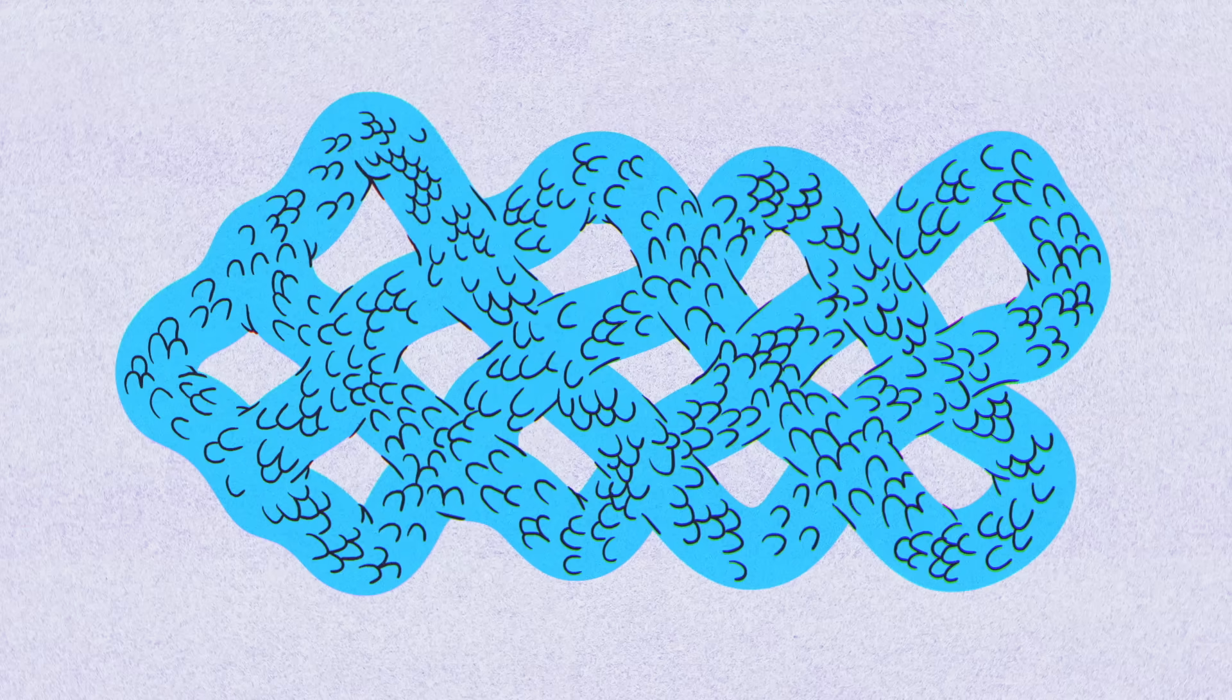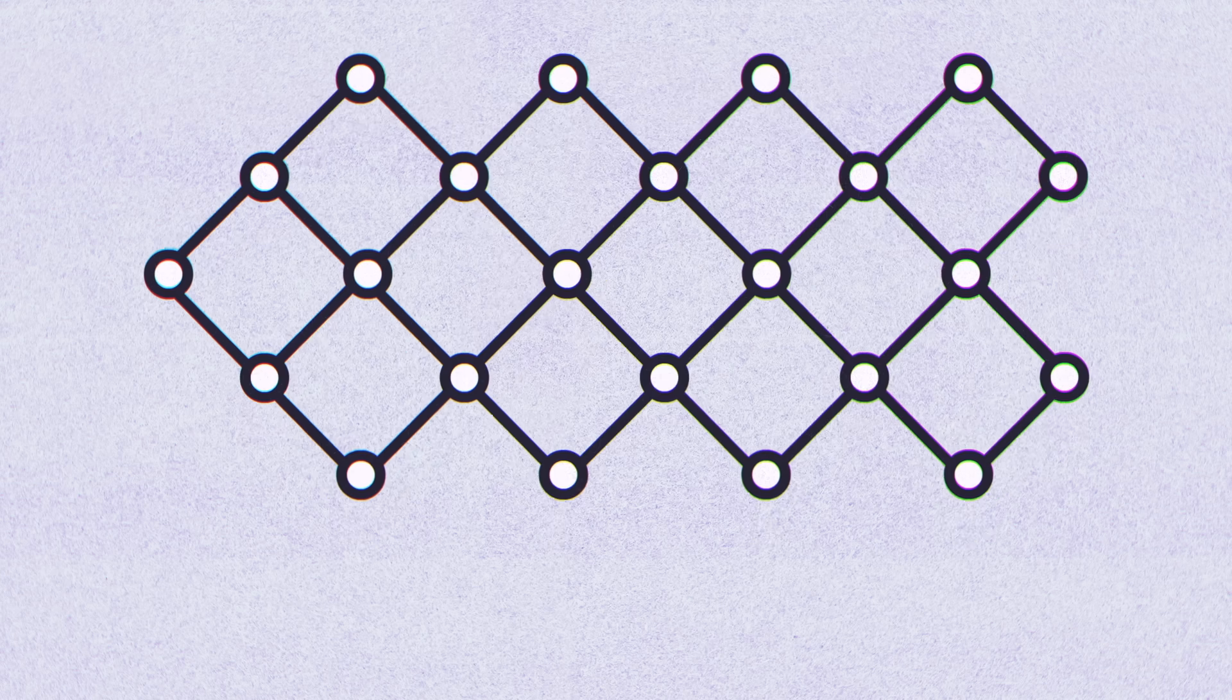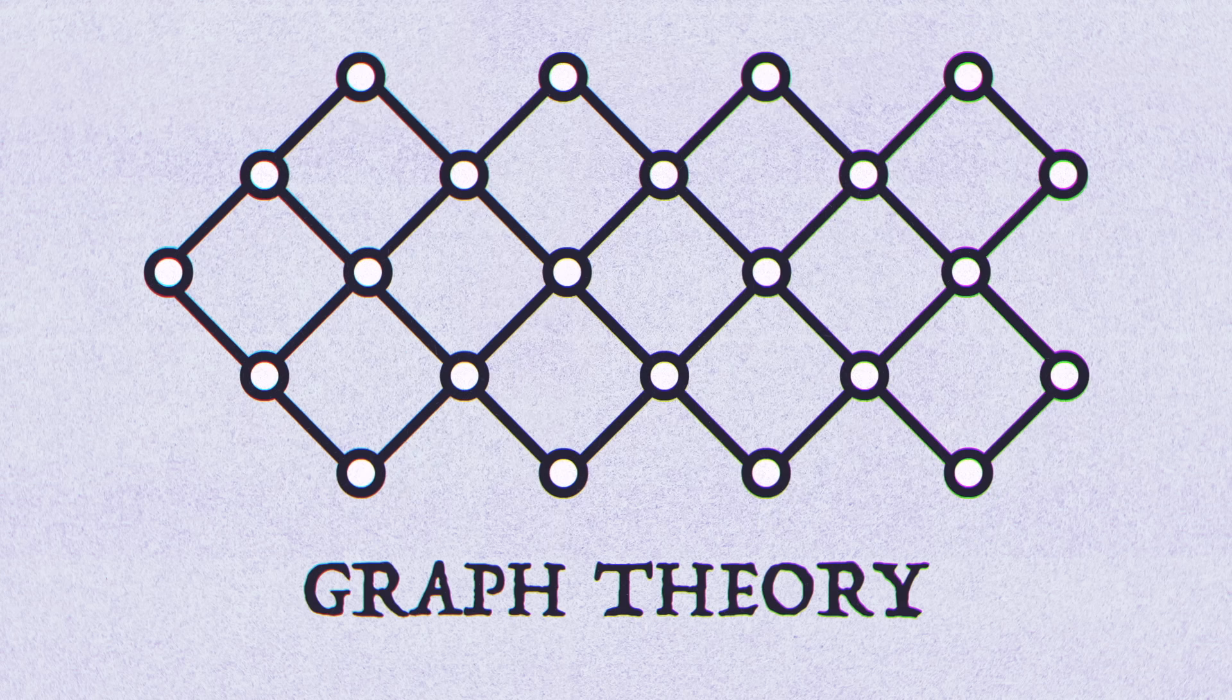One powerful way to solve problems is to simplify. And in this case, we can focus our attention on the two things that are important for our path, intersections and the stretches of snake between them. Or, as they're referred to in graph theory, nodes and edges.